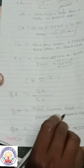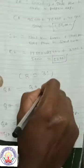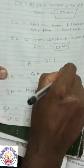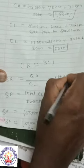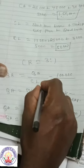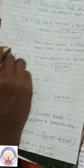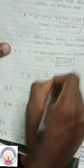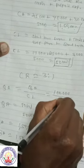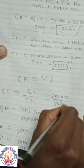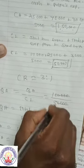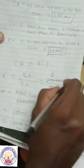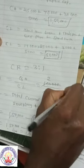Quick asset equals 1,00,000. Now finding the quick ratio: Quick assets 1,00,000 divided by Current liabilities 50,000. Quick ratio equals 2 is to 1.